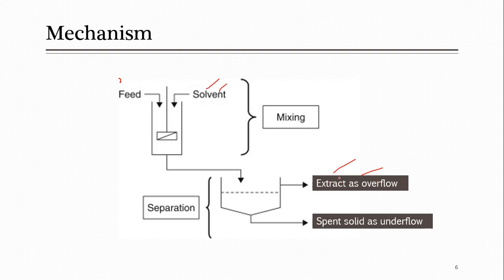The top layer — solvent plus extracted solute — leaves as overflow, which we call the extract. The bottom portion is the spent solid, also called the leached solid. It is usually wet and contains some amount of solvent as well as the remaining extracted solid. Suppose you have a next stage: both streams go there, come in contact again, and more solute is recovered — continuing until the desired extraction is achieved.